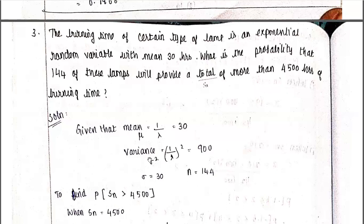The exponential mean is given as 30 hours, so 1/λ = 30. The variance is (1/λ)² = 900. Converting to normal distribution parameters: μ = 30 and σ² = 900, so σ = 30. We have n = 144 lamps, and we need to find the probability that the total burning time exceeds 4500 hours.